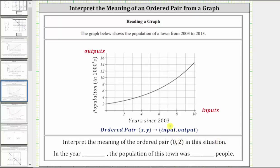For every ordered pair, the first value is the input and the second value is the output. Graphically, the inputs are always along the horizontal axis, and the outputs are always along the vertical axis.